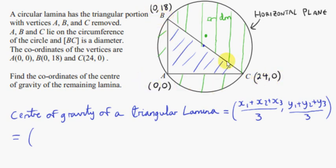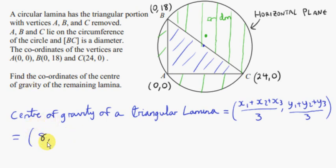Adding up the x-values: 0 + 0 + 24 = 24, divided by 3 gives 8. Adding up the y-values: 18 + 0 + 0 = 18, divided by 3 gives 6. So the centroid of the triangle is (8, 6). When we discuss laminas in these problems, we assume the weight or mass is uniformly distributed throughout the lamina — so equal areas have equal mass. That's what we mean by a uniform lamina. The thickness is negligible, so we're dealing with an essentially two-dimensional object.